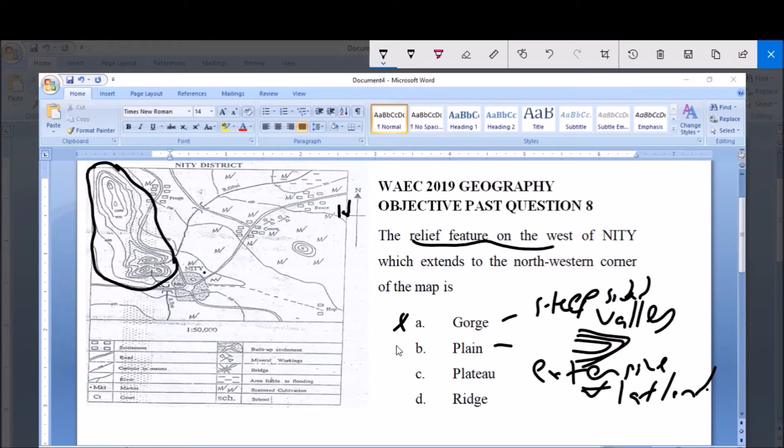Hence it cannot be plain, which is option b. Now option c is plateau. Plateau is basically an elevation, an extensive highland, extensive elevation with a flat top, and it's usually represented this way with an imperfectly rounded top that represents the flat top. So that also does not fit into